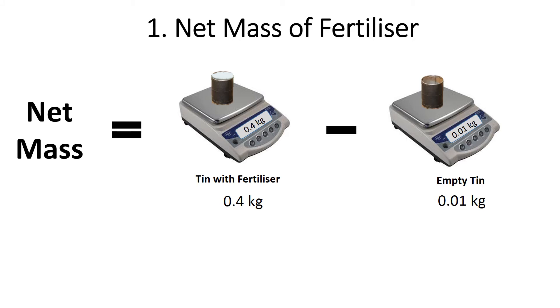In our case, it's 0.4 kilograms — the tin with the fertilizer — minus 0.01 kilograms, giving us a net mass of 0.39 kilograms.